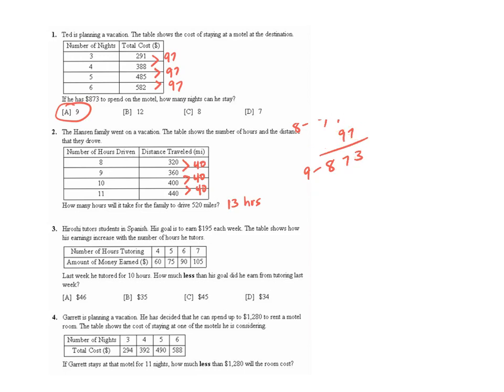Question three says Hiroshi tutors students in Spanish. His goal is to earn $195 each week. The table shows his earnings increase with the number of hours that he tutors. And it looks like that he's between four and five hours. He earned $15 more. So plus 15 here, plus 15 here, and it looks like plus 15 here. So it looks like he's earning $15 per hour.